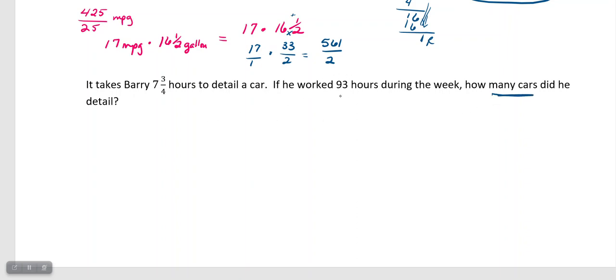But, it says that we want to know how many cars did he detail. He worked 93 hours, and it takes him seven and three-fourths hours to detail a car. So, I'm going to divide because it would be seven and three-fourths hours for each car. So, seven and three-fourths hours times the number of cars would equal the number of hours he worked. Or, I can take the number of hours he worked and divide it by seven and three-fourths to get the number of cars that he detailed.